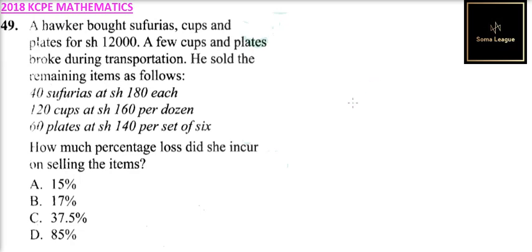40 sufurias at 180 each, 120 cups at 160 per dozen, 60 plates at 140 per set of six. How much percentage loss did she incur on selling the items? So we need to know the amount that she sold. Let's calculate that.